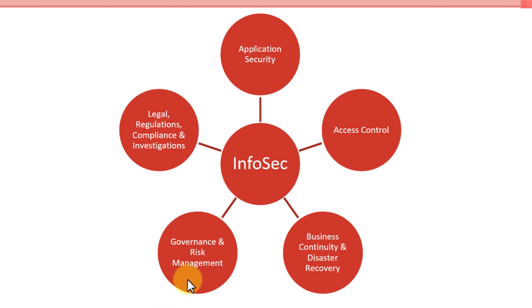The next one is governance and risk management, and this is where I spend a lot of my time at work. Governance deals with all the policies and procedures, dealing with C-level executives, molding the information security program from a strategic perspective, from a legal and compliance perspective, and putting together different steering committees and governance boards. Risk management is about looking at risks from a quantitative or qualitative standpoint to determine what our risks are, how severe they are, and how we should put control measures into place.